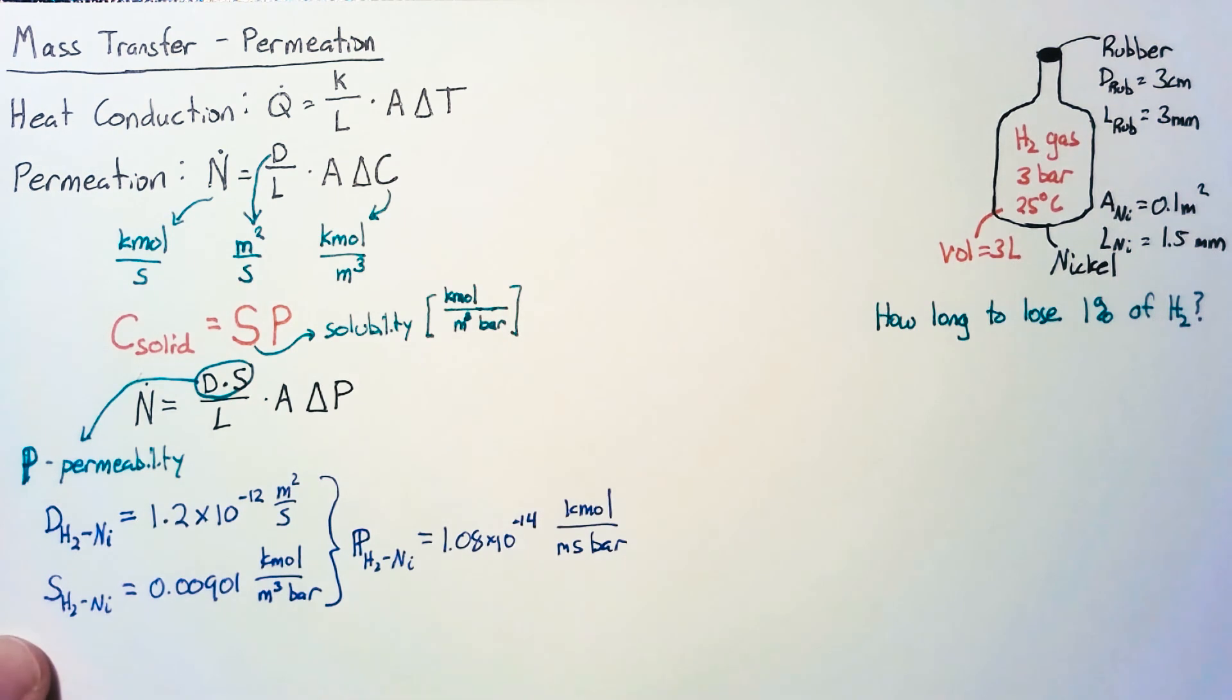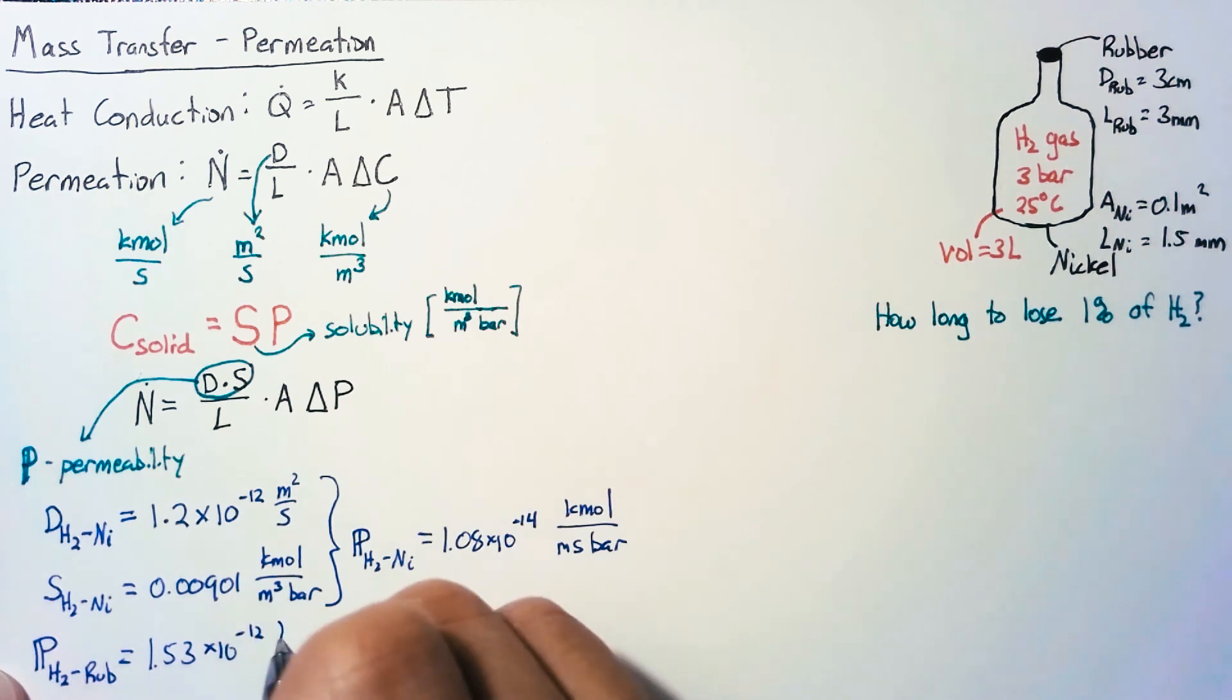We don't have the individual values for rubber, just the total permeability. The permeability for hydrogen through rubber is 1.53 × 10⁻¹² kilomoles per meter second bar.